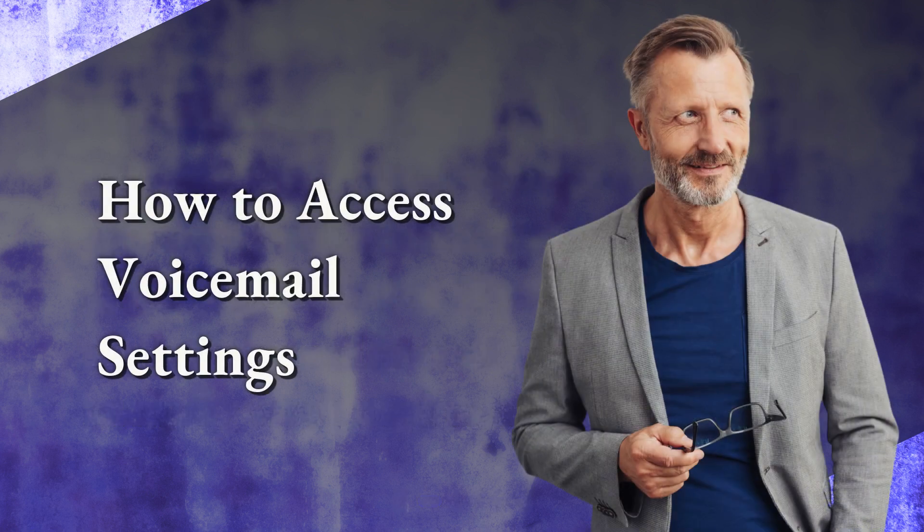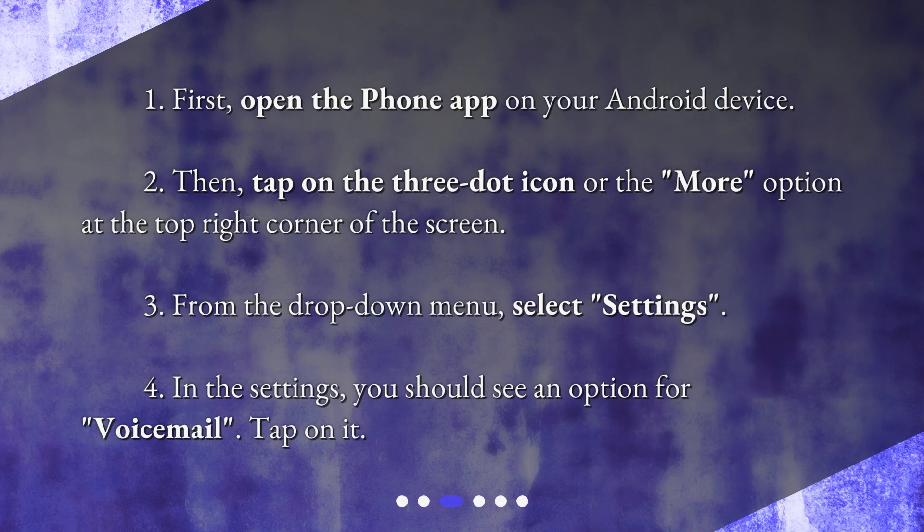How to access voicemail settings? First, open the phone app on your Android device. Then, tap on the three-dot icon or the More option at the top right corner of the screen. From the drop-down menu, select Settings. In the Settings, you should see an option for Voicemail. Tap on it.